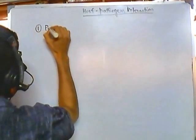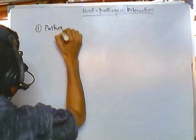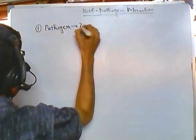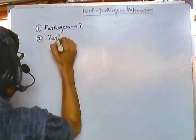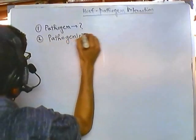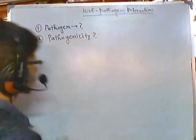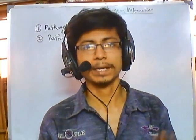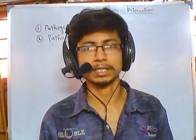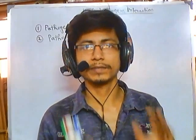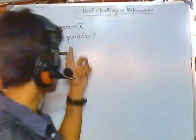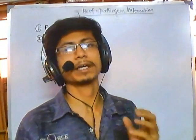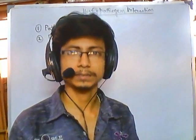First of all, what is a pathogen? A pathogen is an organism or microorganism that is able to cause an infection or a disease in a healthy host. Pathogenicity is the property of that microorganism to cause disease.